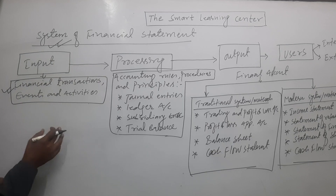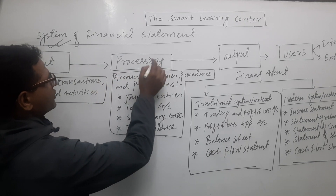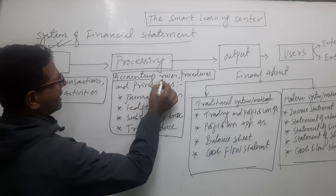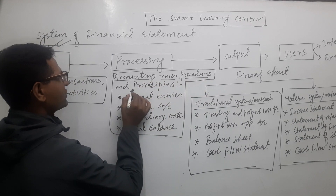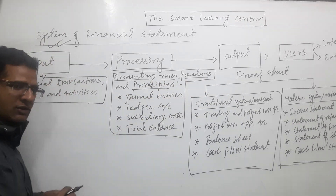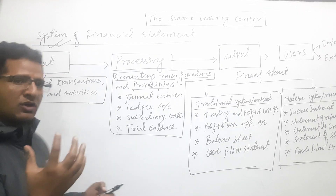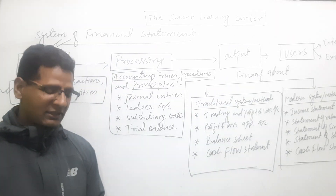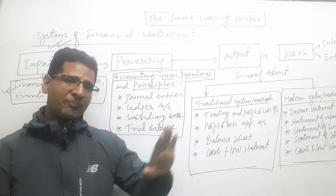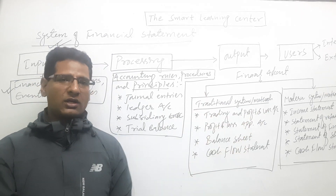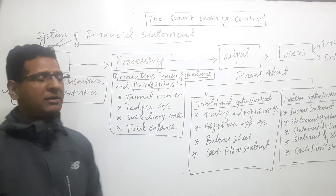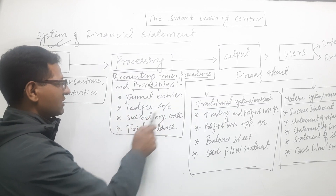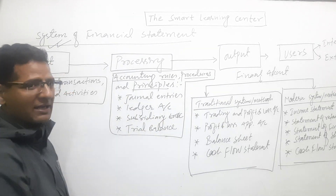Based on the input mechanism, we have processing. Processing means we have accounting rules, procedures, systems, and principles that we have to follow. We know different rules of debit and credit. We have to give them a journal entry — modern rule, traditional rule. We have to make a journal entry, ledger and subsidiary books, and trial balance.